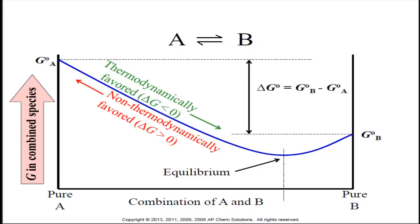From a thermodynamic point of view, the reason why the reaction only makes 80% of the way to completion, if we start with only A, is because the reaction will continue in the forward direction so long as free energy is being released. The reaction continues while delta G is negative and the entropy of the universe is increasing. Once the reaction hits the equilibrium point, it would need to experience an increase in G in order to continue to increase the concentration of B — that change in G would give us a positive value, causing a decrease in the entropy of the universe. The universe simply wouldn't allow this to happen.